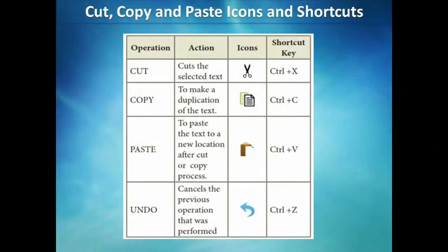This table displays the icons and shortcuts for Cut, Copy, and Paste. Ctrl+X is the shortcut for Cut, Ctrl+C is the shortcut for Copy, and Ctrl+V is the shortcut for Paste. Undo is Ctrl+Z. Undo means to cancel the previous operation performed by the user in a document. For example, if you changed the color of text from black to blue but don't want that change, press Ctrl+Z — it will undo the operation and restore the previous color.